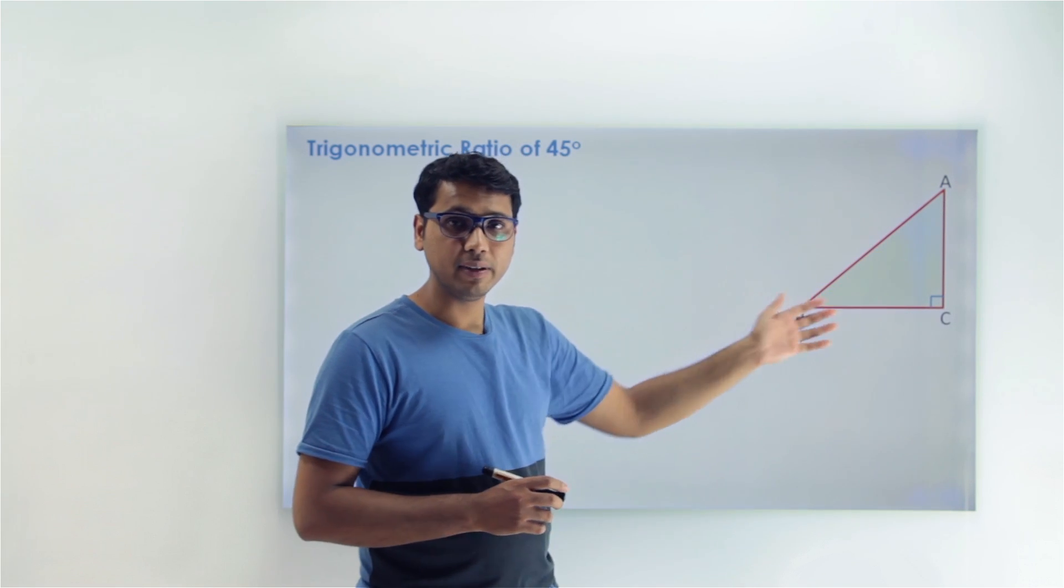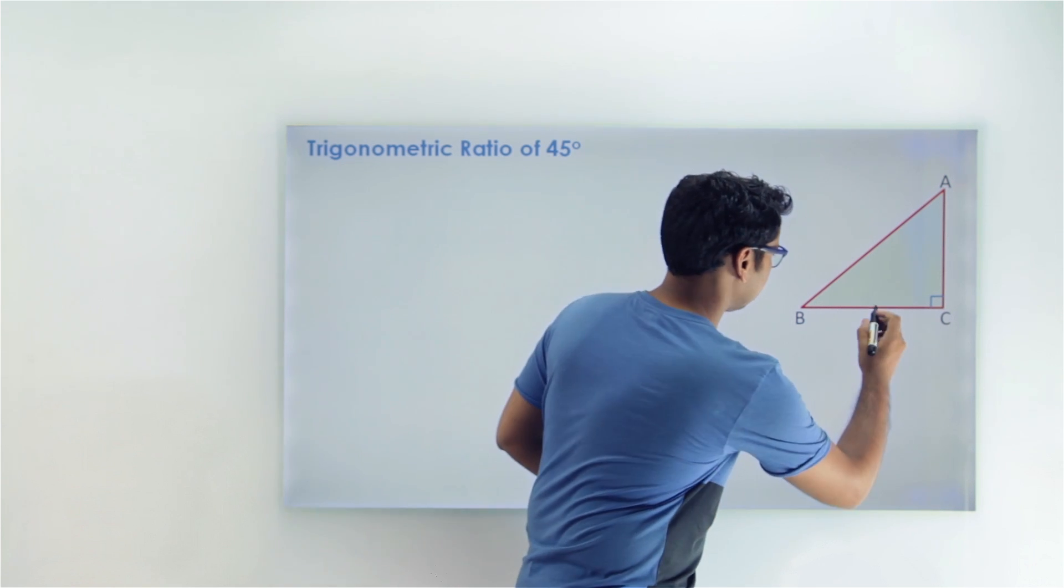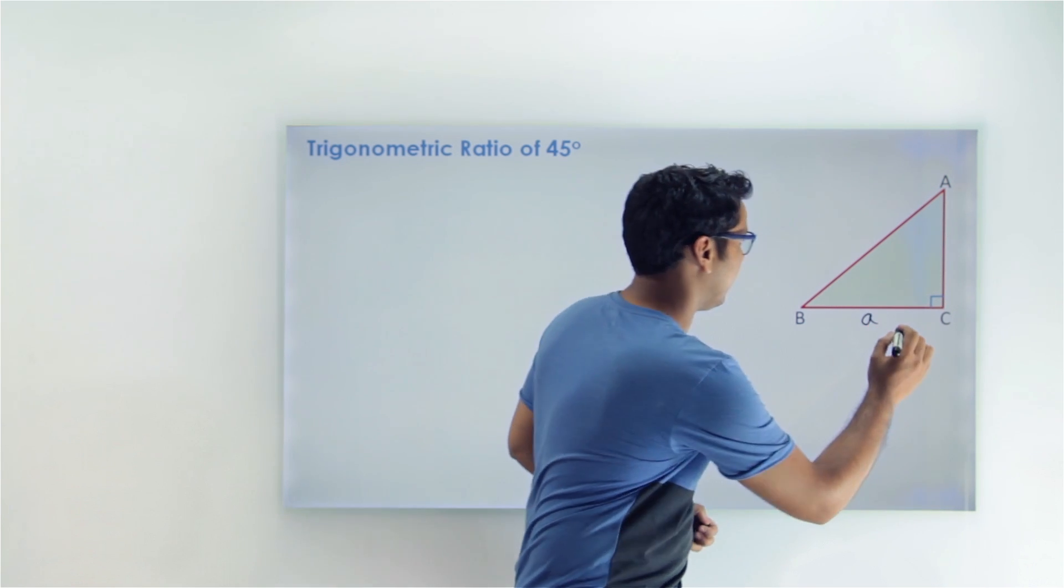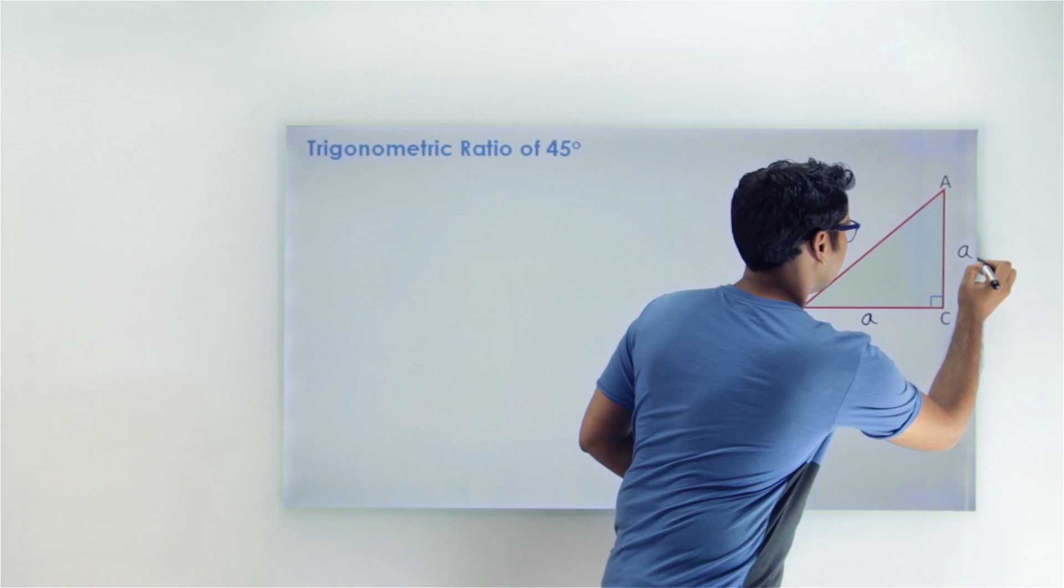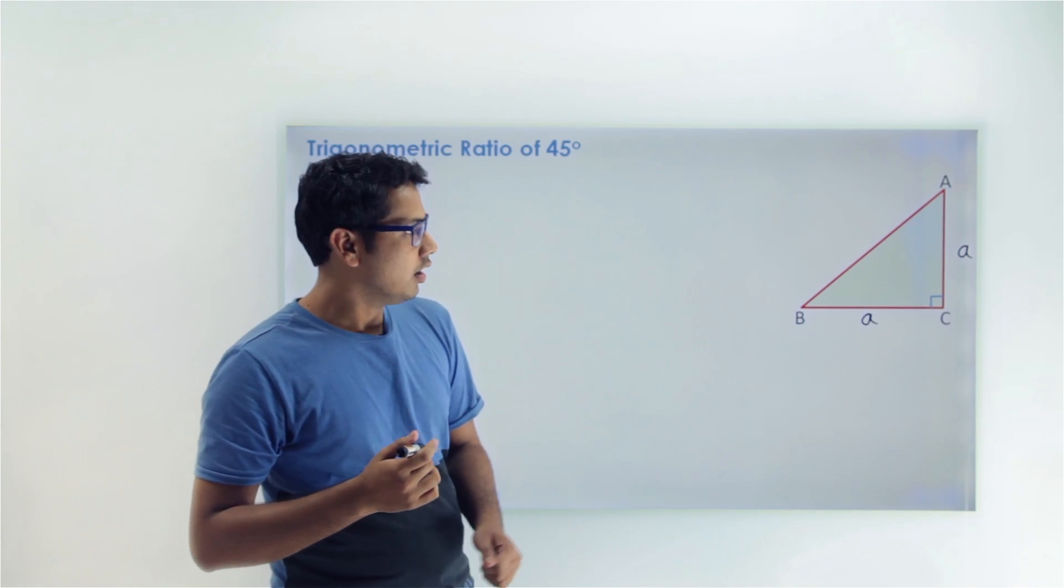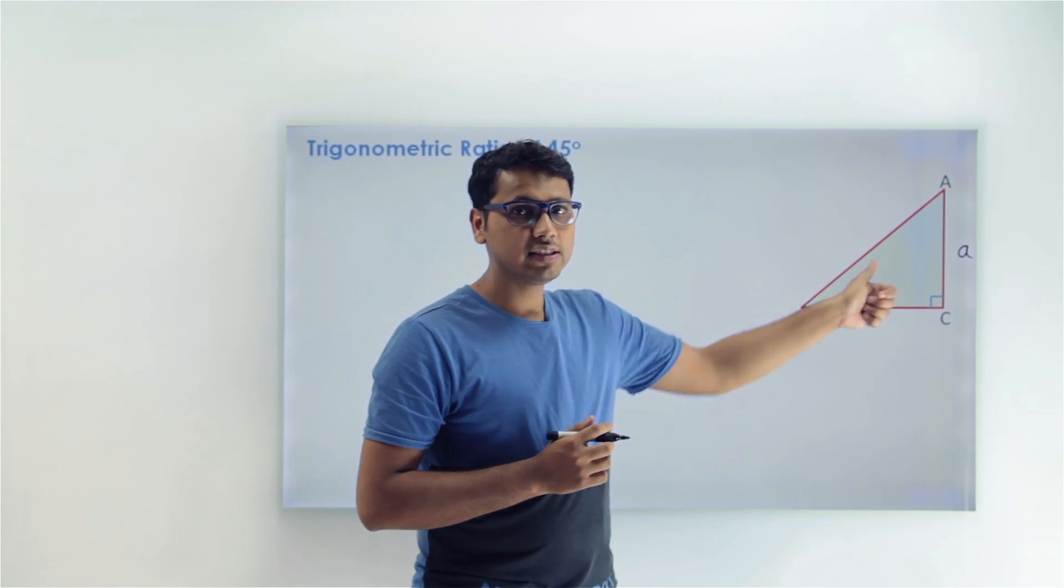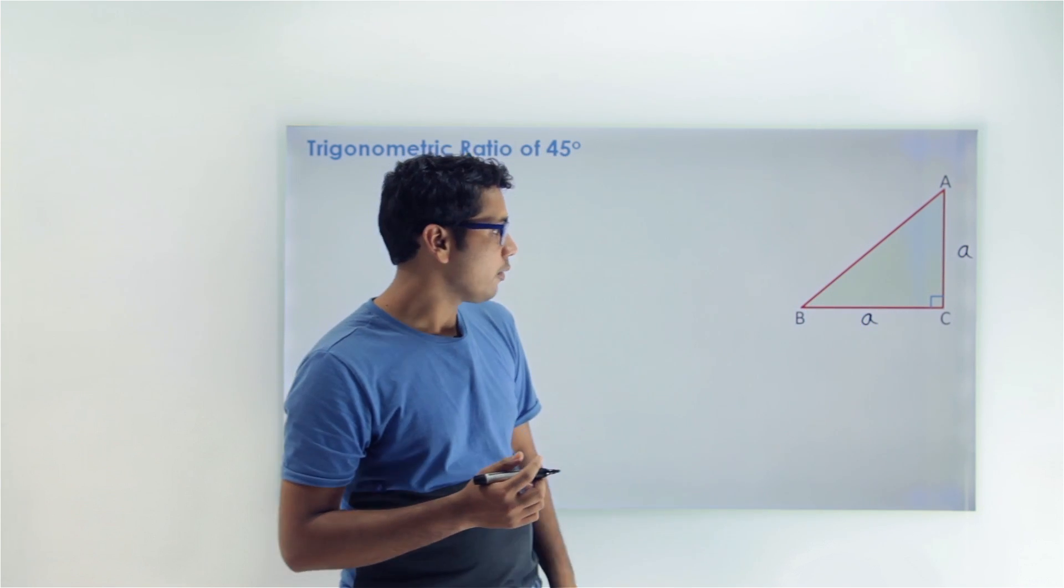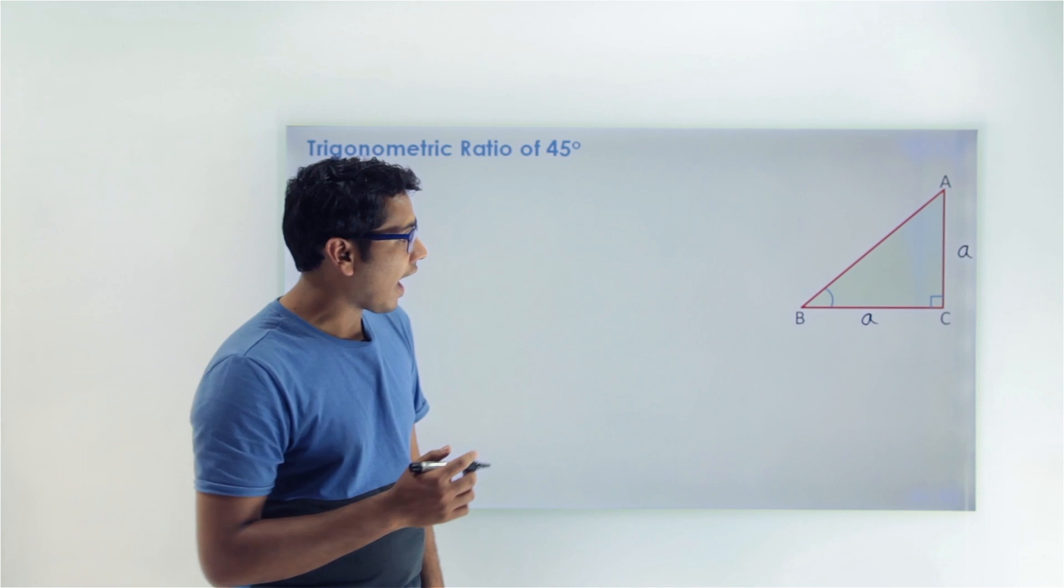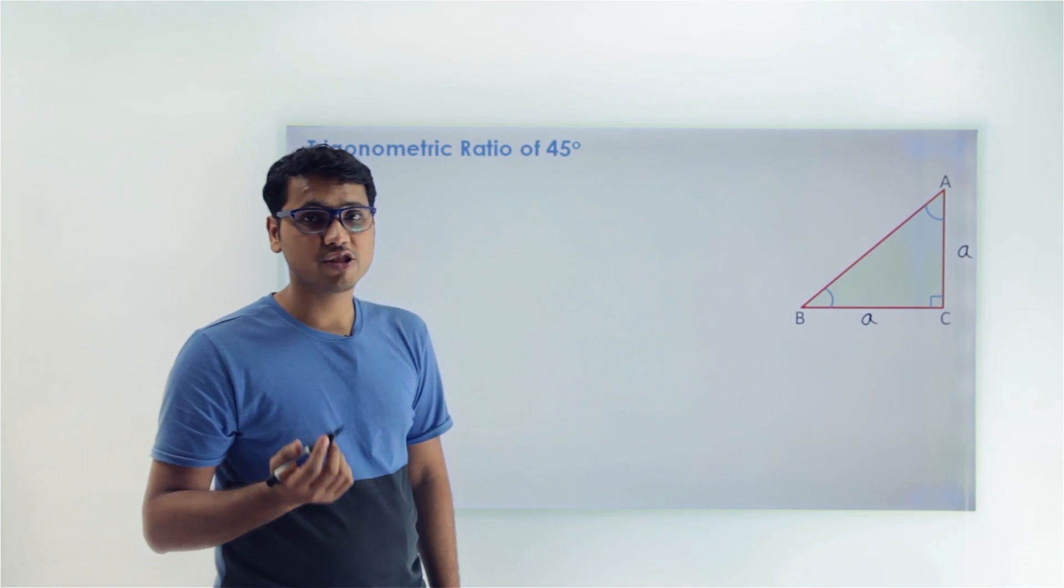So AC and BC are equal here. Let's mark these sides as a and a. We know very well that the angles opposite to these sides must be equal. So we can say that angle B and angle A are equal to each other.